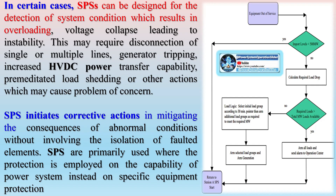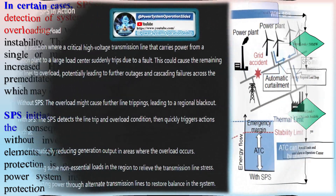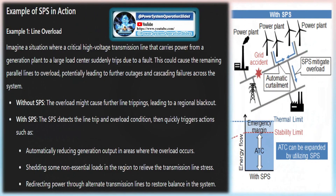Frequency instability occurs when power system frequency varies beyond the operating limits. Corrective actions include generator tripping, rapid generation reduction through fast valving or water diversion, control of HVDC power transfer, load shedding, controlled opening of interconnection to neighboring systems to prevent spreading of disturbance, and controlled islanding of the local system into separate areas with matching generation and load.